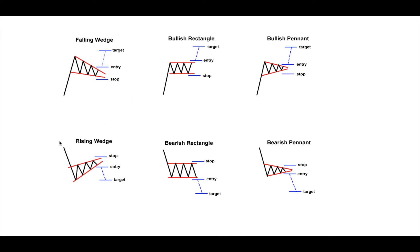Now their exact opposites: a rising wedge comes after a bearish fall in the market. After a nice downward move, we see an ascending line on the bottom and a less-ascending line on the top, creating a squeeze — known as a correction. Stop is above the last point, entry is on the breakout, and target is the same distance measurement. The bearish rectangle and bearish pennant follow the same rules as their bullish counterparts — these are all continuation patterns.